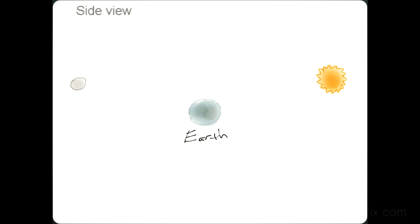This is why there is not a lunar eclipse and not a solar eclipse every 28 days when the moon orbits around the Earth. That's why the shadow of the Earth only goes onto the moon every once in a great while — and the same thing, the shadow of the moon going on the Earth only happens every once in a while, not every 28 days.